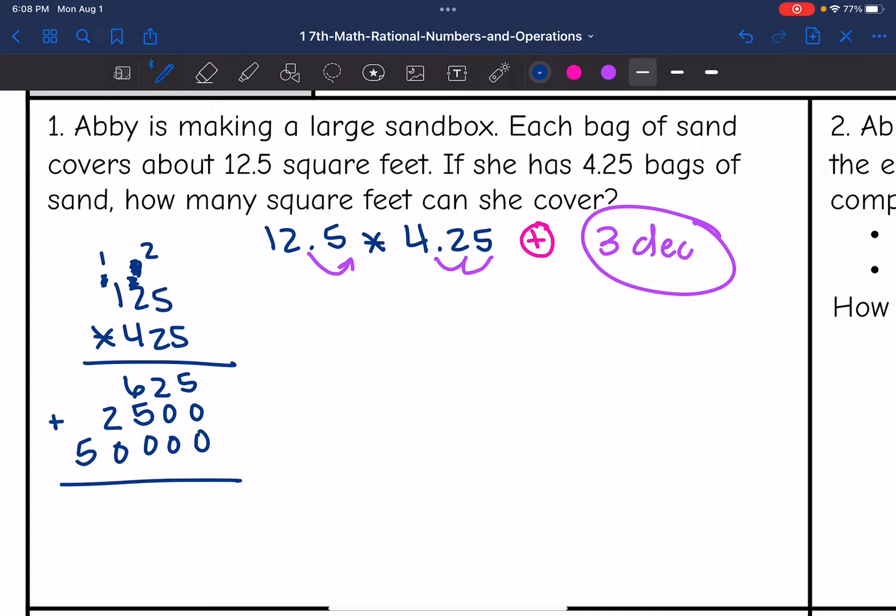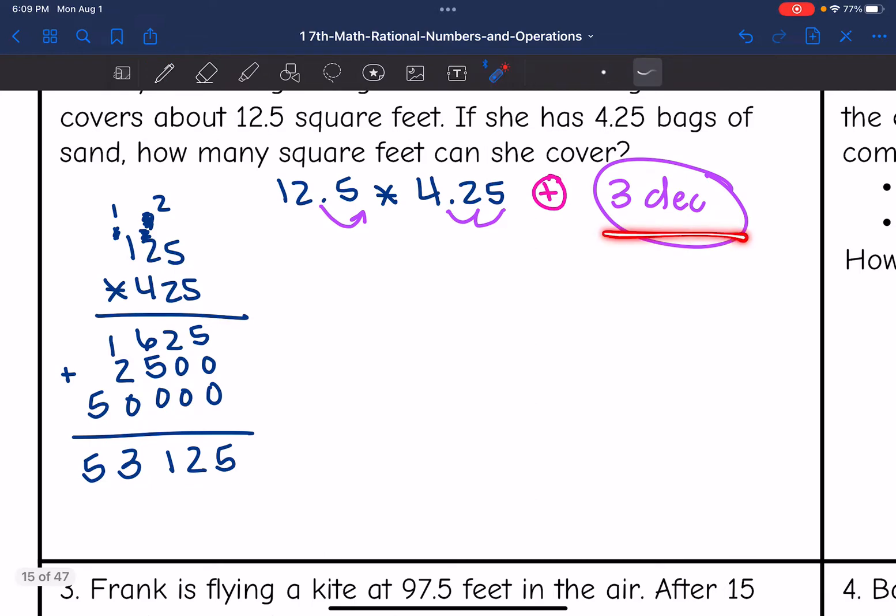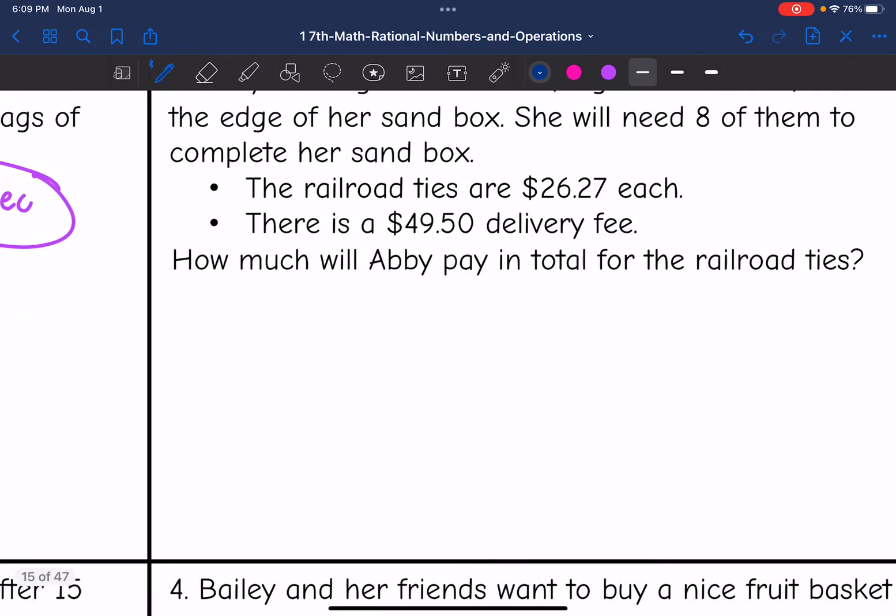Now I'm going to add all this. This would be 5, this would be 2, then 6 plus 5 plus 0 is 11, 1 plus 2 plus 0 is 3, and then I bring down the 5. And then I have to move back three decimal spaces since that's how many there were in the original numbers. So the 4.25 bags of sand would cover about 53.125 square feet.